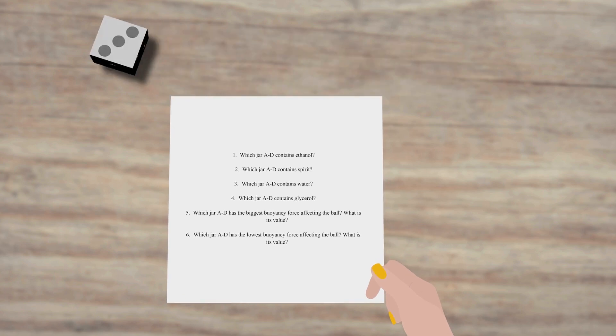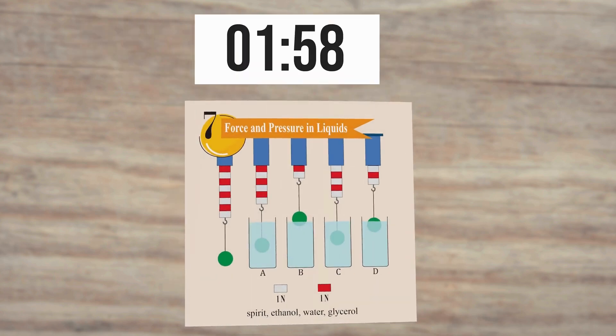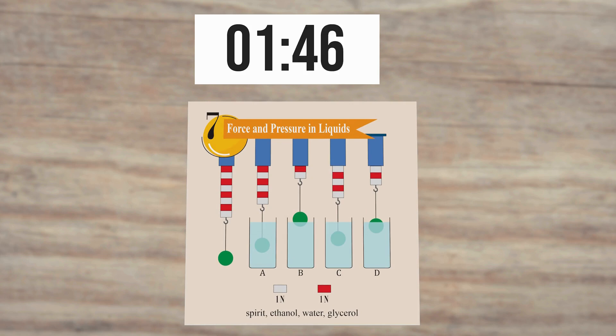The number on the dice is the number of the question for the player to answer. The player has to answer and briefly explain the question within 2 minutes.